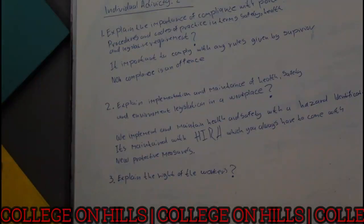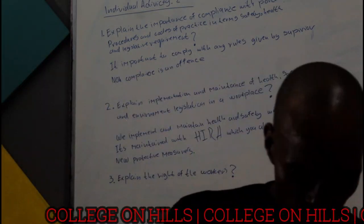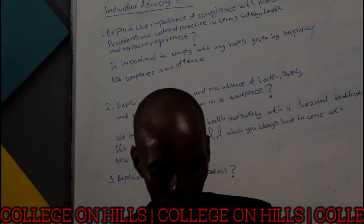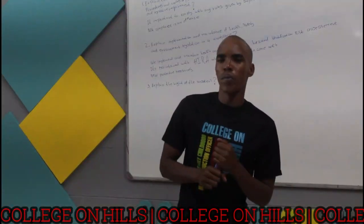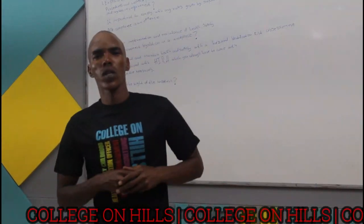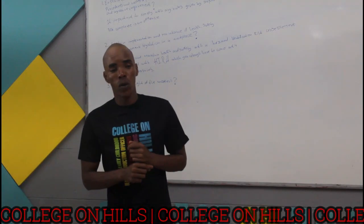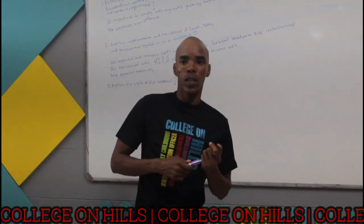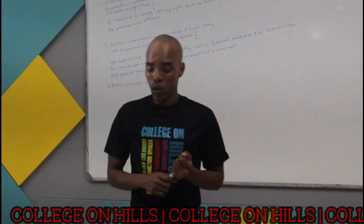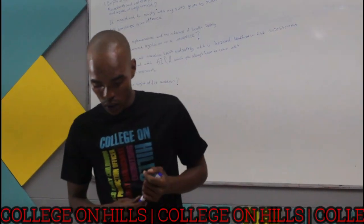Explain the rights of workers. Workers must have access to the occupational health and safety regulations. Workers should have access to regulations because it's the law, and it is very important for every worker to have health and safety regulations.